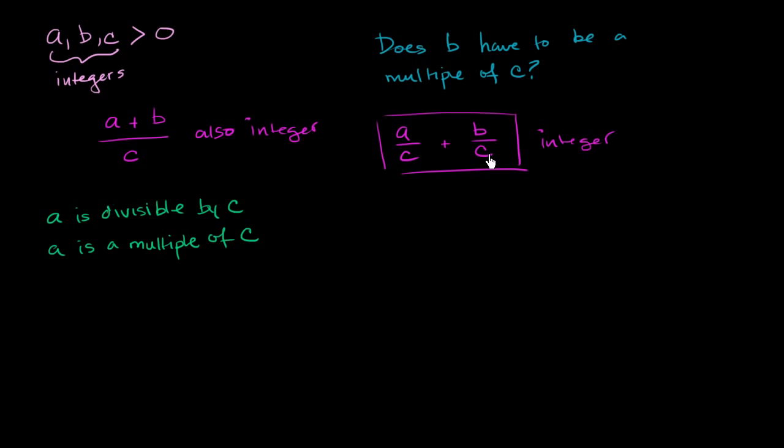Now, what do we know about these parts? Well, a over c is a divided by c. We know that a is divisible by c, that a is a multiple of c. So a divided by c is going to be an integer. This information tells us that a over c is an integer.